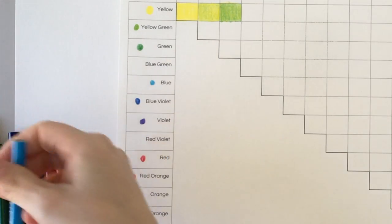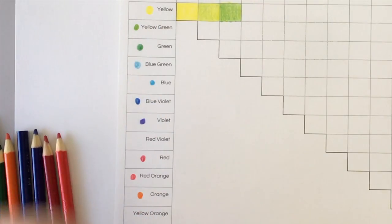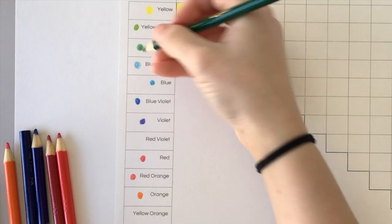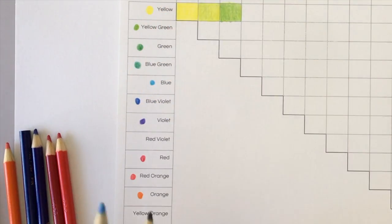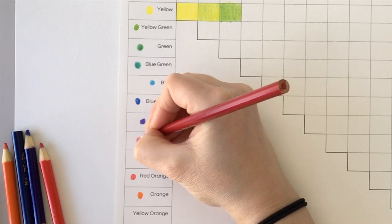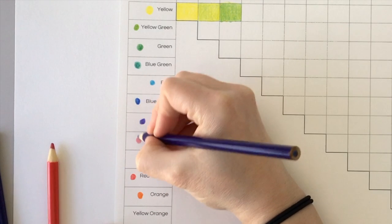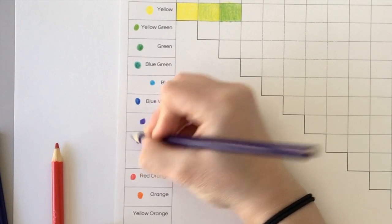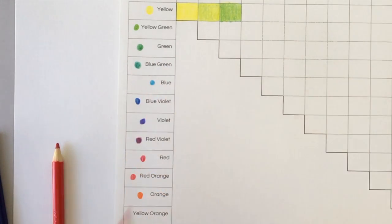For blue-green, I'm going to use the light blue and the dark green, and that's going to get me my blue-green. And then for red-violet, red and violet. You're trying to get even amounts of both these colors. And then yellow-orange.